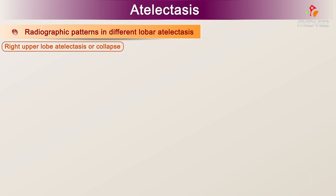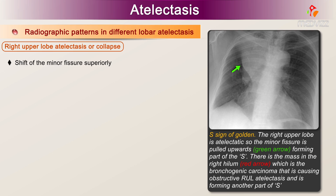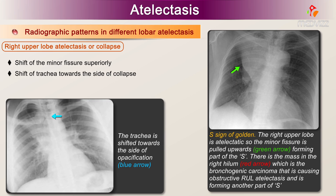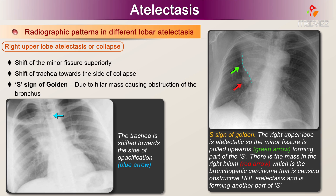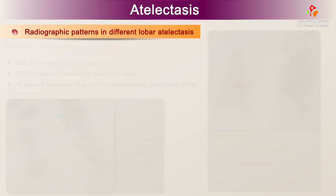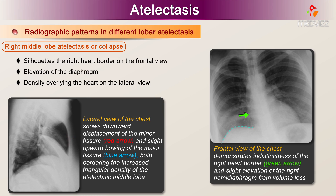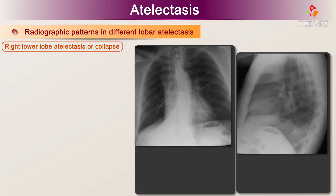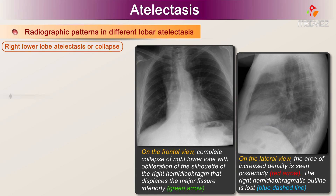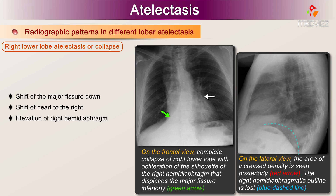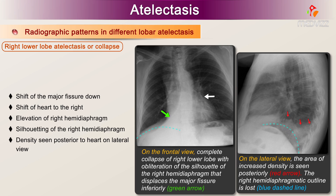1. Right upper lobe atelectasis or collapse: shift of the minor fissure superiorly, shift of trachea towards the site of collapse, and the S-sign of Golden — due to a hilar mass causing obstruction of the bronchus resulting in right upper lobe collapse. 2. Right middle lobe atelectasis or collapse: silhouettes the right heart border on the frontal view, elevation of the diaphragm, and a density overlying the heart on the lateral view. 3. Right lower lobe atelectasis or collapse: shift of the major fissure down, shift of heart to the right, elevation and silhouetting of the right hemidiaphragm, and density seen posterior to the heart on lateral view.